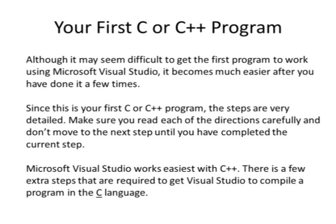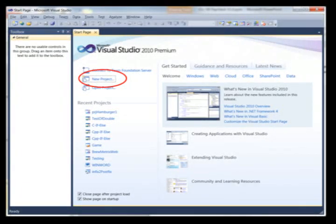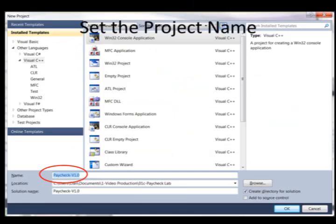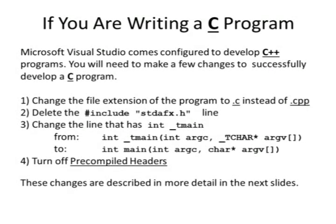Microsoft Visual Studio works easiest with C++. There are a few extra steps that are required to get Visual Studio to compile a program in the C language. Start Visual Studio. If you don't have Microsoft Visual Studio, you can download it for free off the Microsoft website — get Microsoft Visual Studio C++ Express Edition for free. You should now have an empty project. Your project should look like this after you click on View in the menu and select Solution Explorer. Click the name of the project and click Source Files. Microsoft Visual Studio comes pre-configured to develop C++ programs, so if you want to do the program in C, there are a few things you need to change.